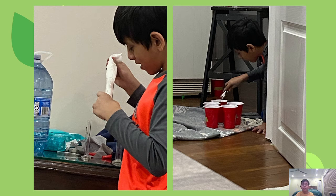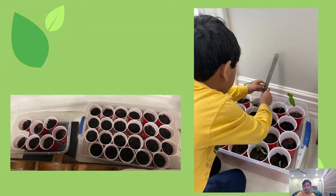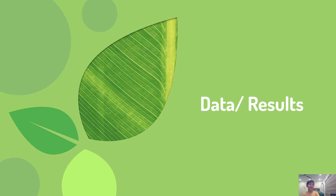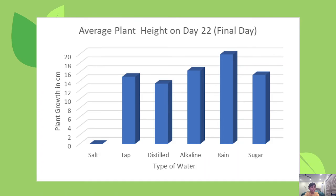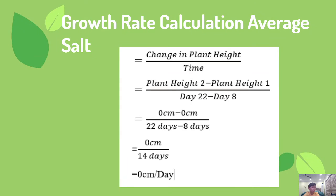These are some pictures of the process. Here we can see the final height of the plants. Rain grew the most out of all of them. Here are the calculations I did to determine the growth rate in centimeters per day.